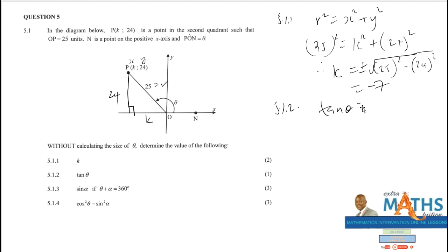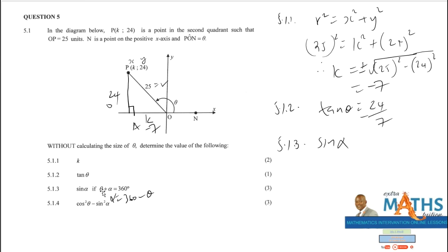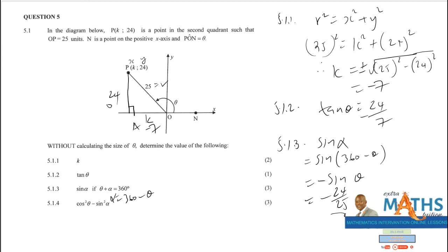For 5.1.2: tan η = opposite/adjacent = 24/(-7) = -24/7. For 5.1.3: find sin α. Given α + η = 360°, so α = 360° - η. Substituting: sin(360° - η). Since 360° - η is in the fourth quadrant, sin is negative: sin α = -sin η = -24/25.